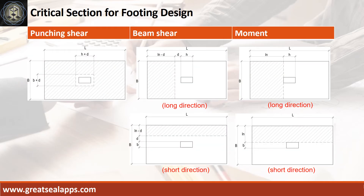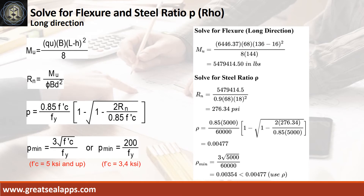Critical section diagrams for punching shear, beam shear, and moment evaluations. At long direction, given ultimate soil pressure equals 6446.37 PSF, footing width equals 68 inches, footing length equals 136 inches, and column side equals 16 inches, the maximum moment is 5,479,414.5 inch-pounds.